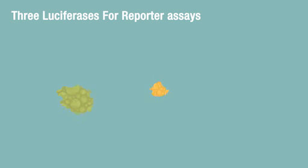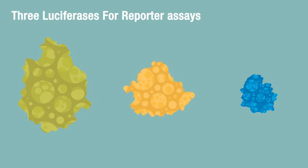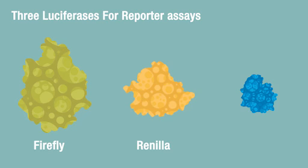Promega applies three different luciferases for reporter assays. Firefly luciferase is great for routine genetic reporter assays. Renilla luciferase is used as a control. And NanoLuc luciferase, a smaller, brighter luciferase best suited for research in challenging biological systems, can be used as a single reporter or as a primary or secondary reporter in the NanoDLR assay.